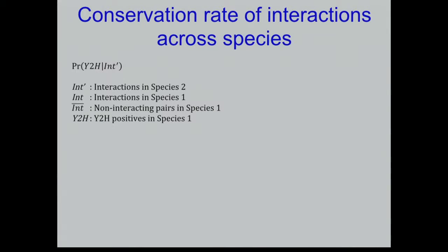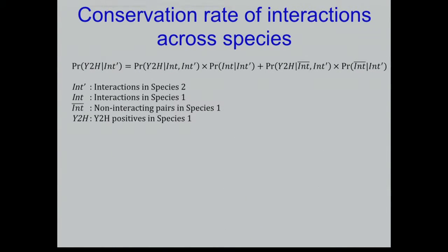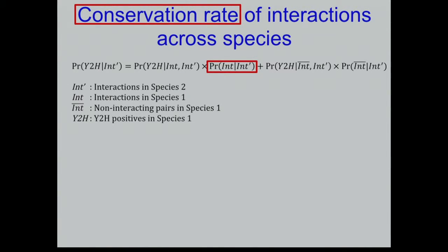What we want is the underlying conservation rate: given an interaction in species 2, is it also an interaction in species 1? The directly observed overlap is actually the probability of observing an interaction in species 2 by Y2H in species 1, which is not the conservation rate. We can expand this and extract the true underlying conservation rate, which requires measuring or estimating the false positive and false negative rates of Y2H in each species — which we can do using our positive and negative control sets.